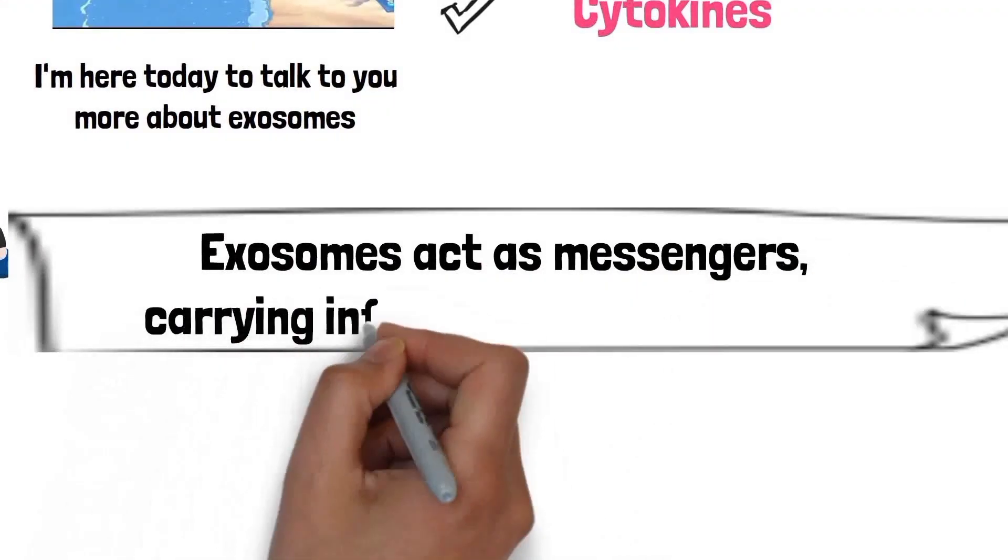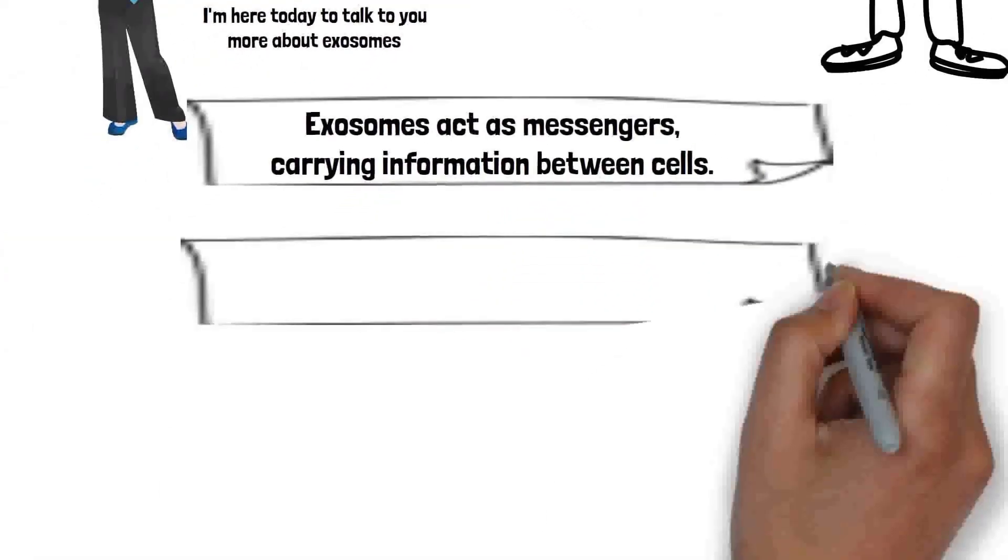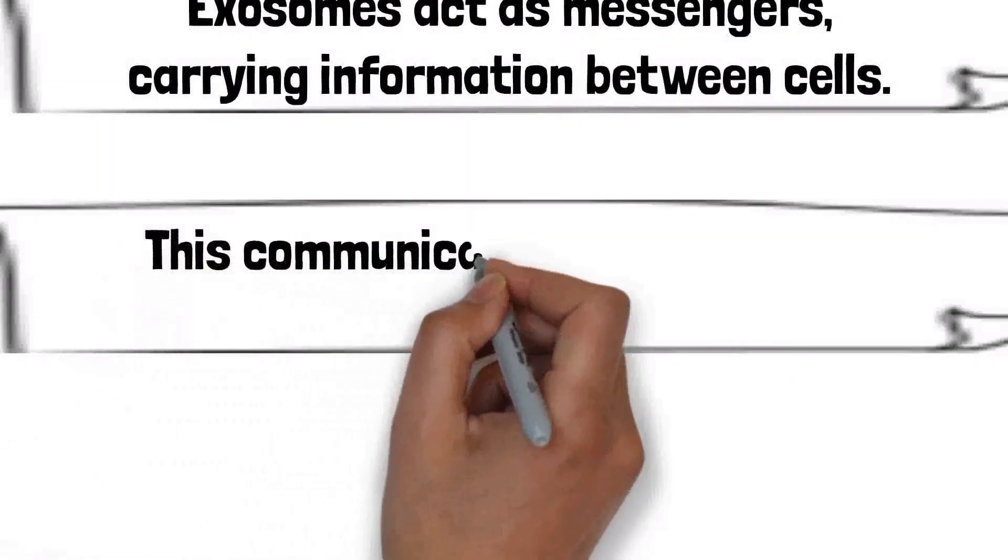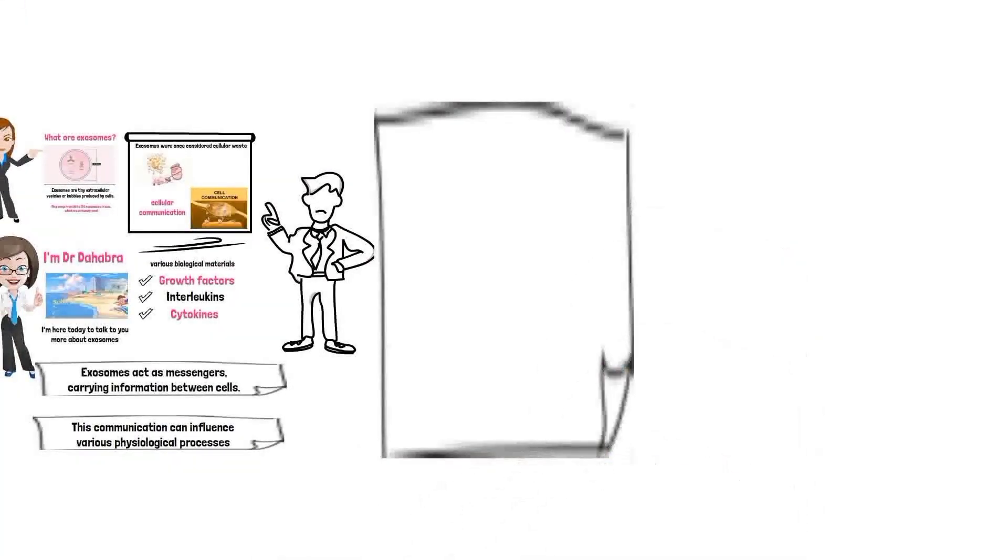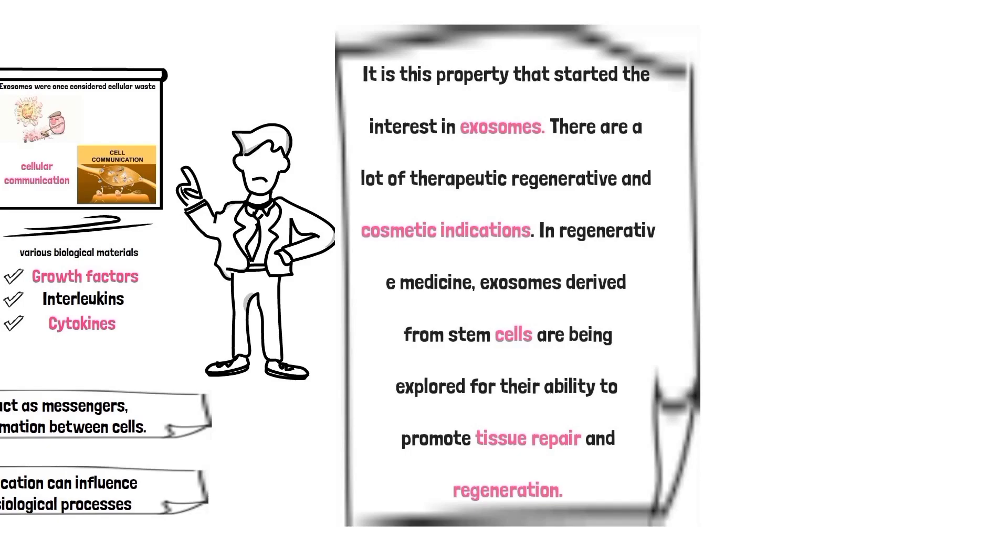Exosomes act as messengers, carrying information between cells. This communication can influence various physiological processes. As an example, they are released to the injured to initiate repair.